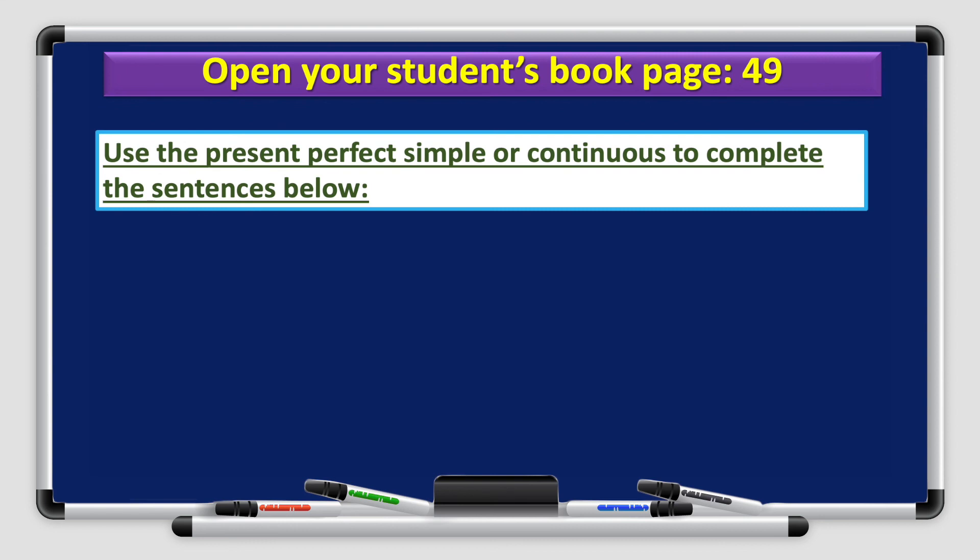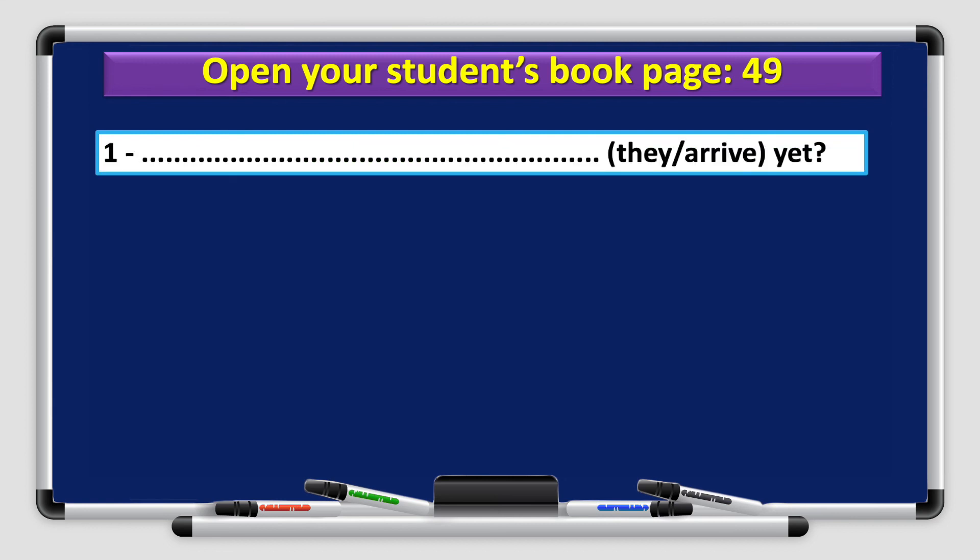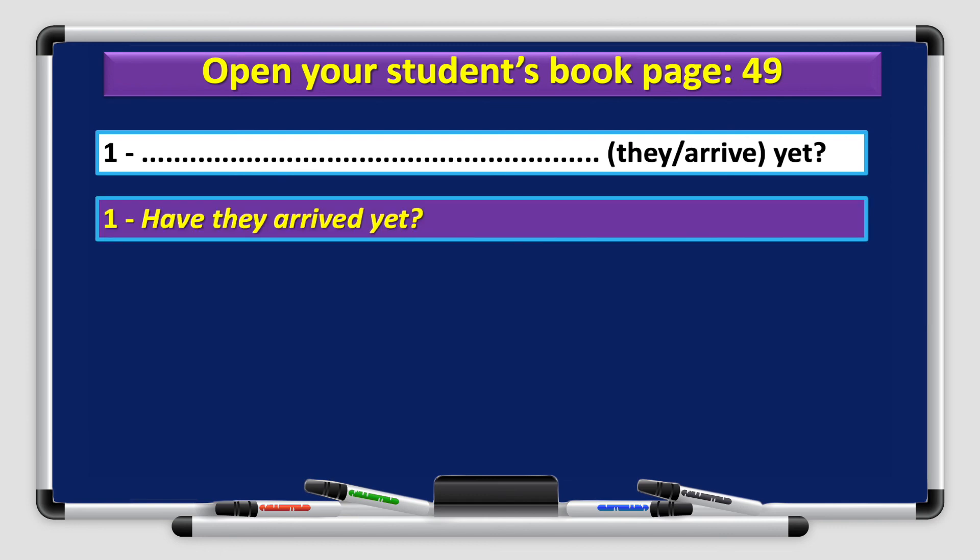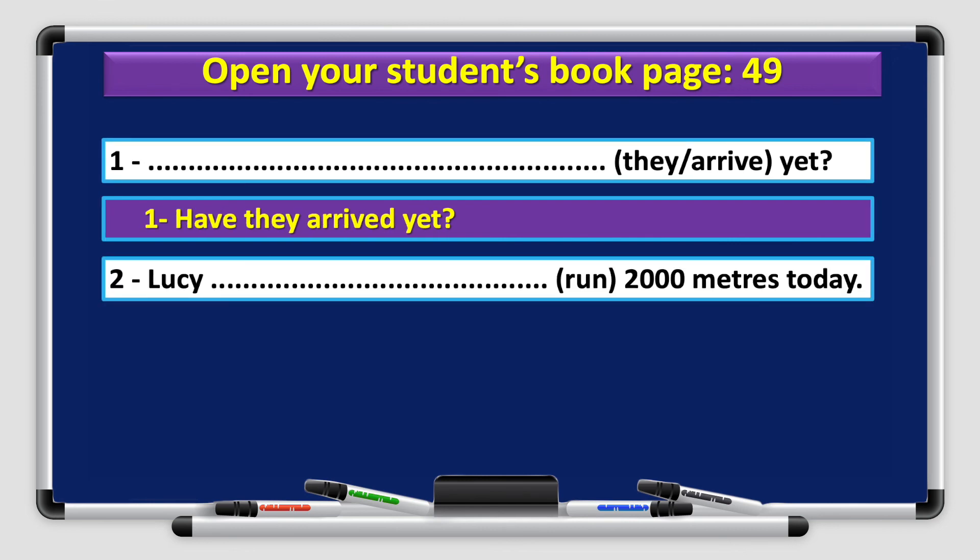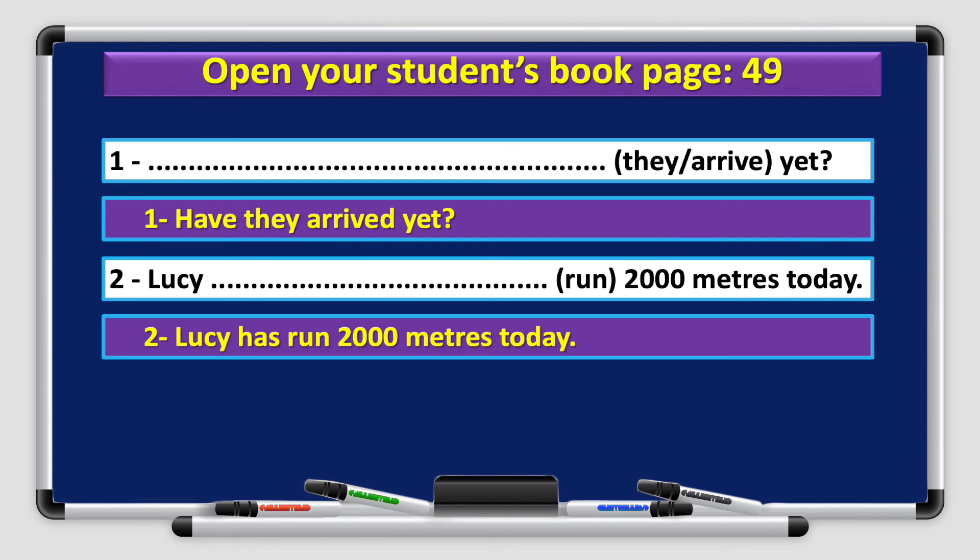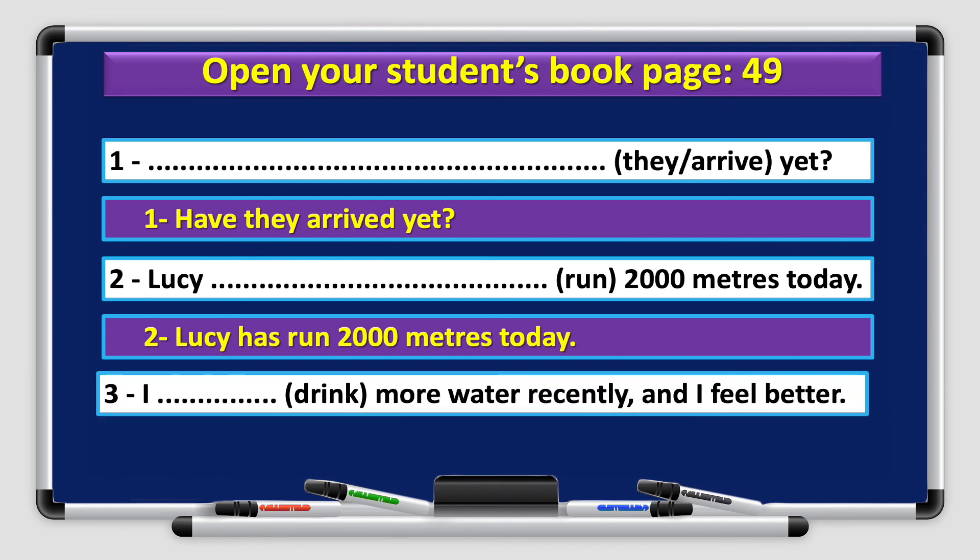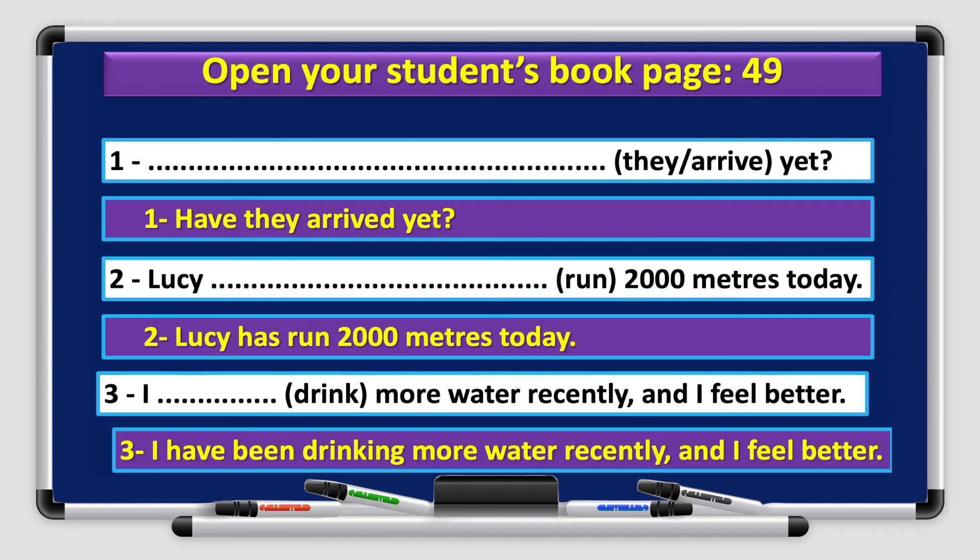Let's complete a task that you can find in your student book page 49. It tells you to use the present perfect simple or continuous to complete the sentences below. Number one. You have they and arrived in brackets and yet. We want to form a question. We use yet for questions. So, my answer will be, have they arrived yet? Number two, Lucy run 2,000 meters today. Lucy has run 2,000 meters today. Number three, I drink more water recently and I feel better. Recently, it's a key word we use with the present perfect continuous. So, I have been drinking more water recently and I feel better.